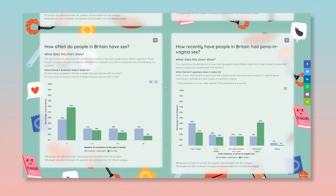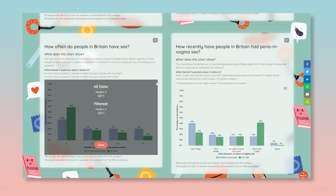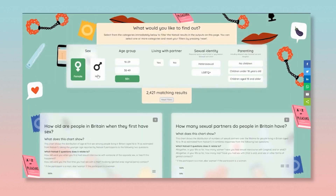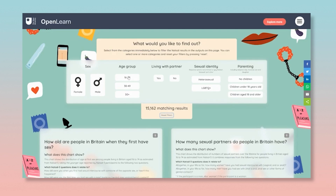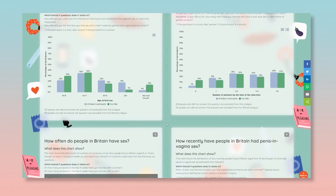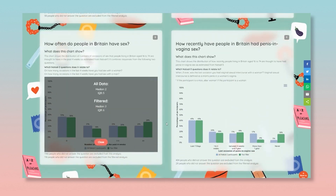In addition to seeing the distribution results for 11 different behaviours and attitudes, for the number of sexual partners and sexual frequency it is also possible to see further details — in particular the median and the interquartile range — by clicking on the extra stats button above the chart. For example, if you have chosen to look at the distribution just for males aged 16 to 29, then you will find that the median number of occasions of sex in the last four weeks is 2, with an IQR of 6.